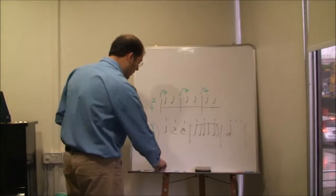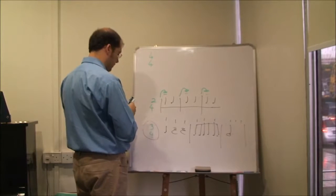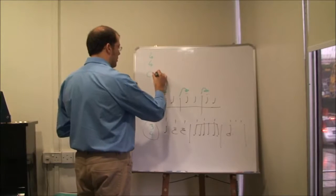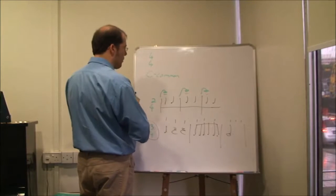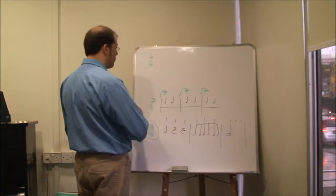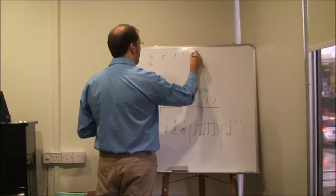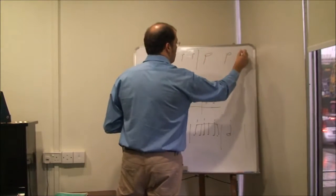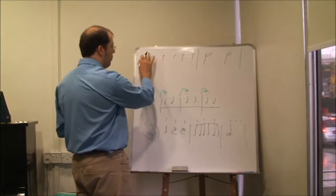So we could also do four-four, and sometimes this is written as a C, which is sometimes referred to as common time. The symbol comes from somewhere else but we often call this common time. So four-four would then just be one, two, three, four. Or we could just write one note like that, or whatever the specific subdivision requires. But the important point is it all adds up to four crotchet beats.